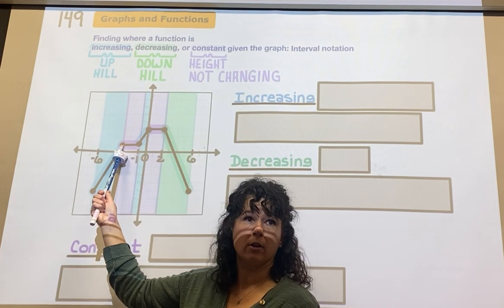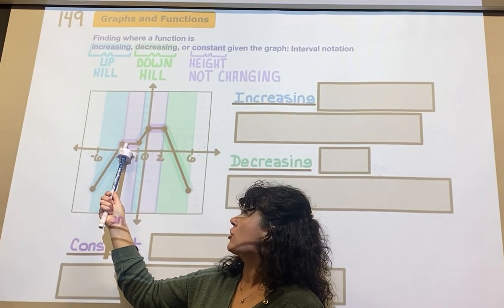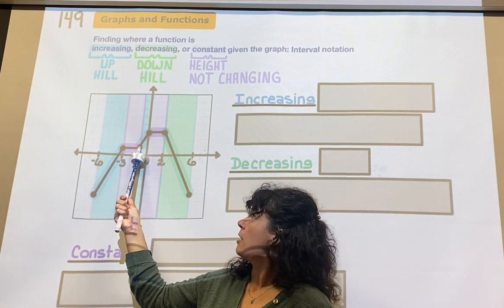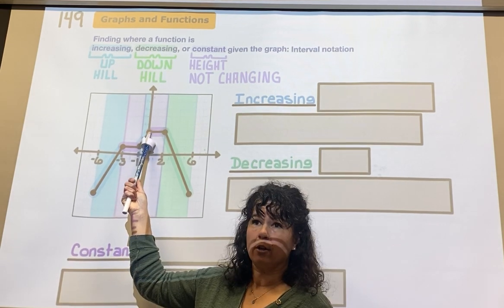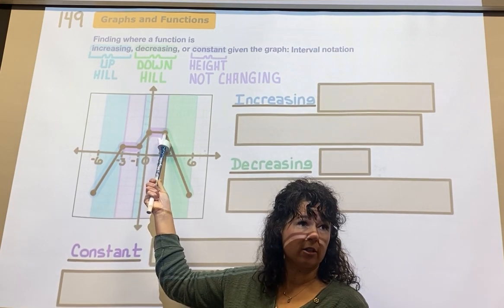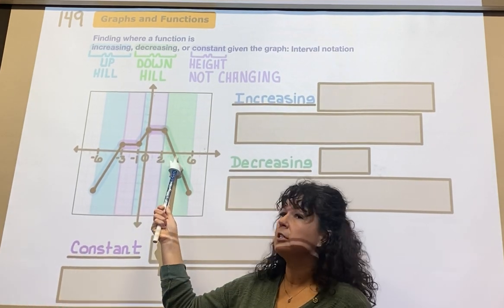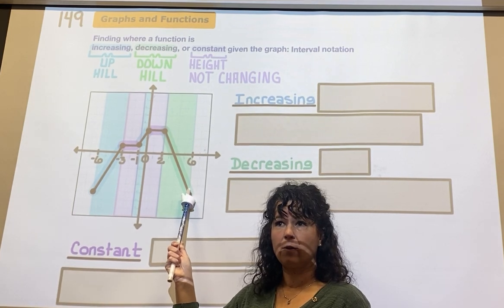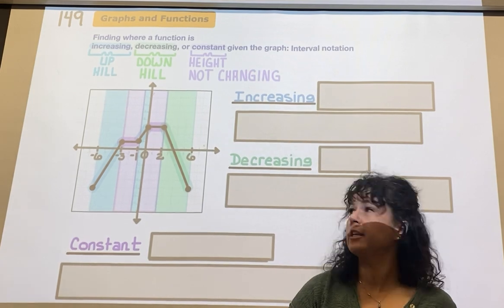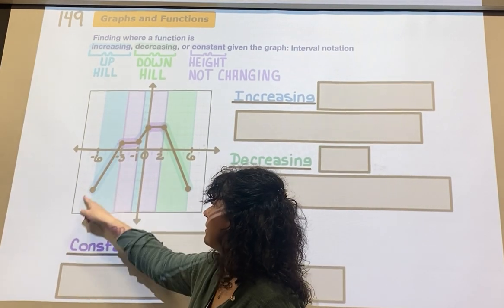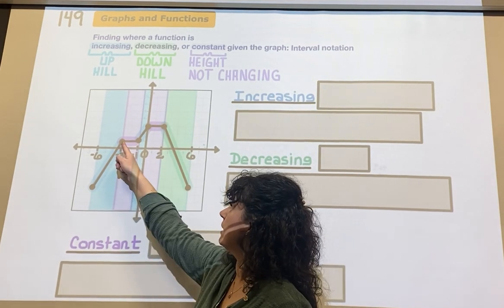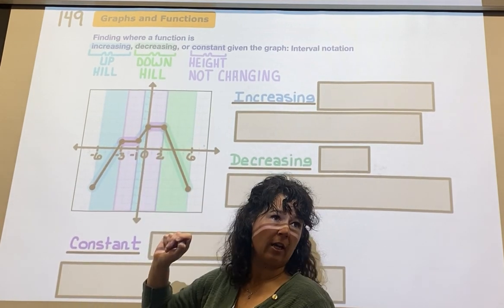This little section right here is going uphill, this section is constant going straight across, this section is uphill, this is straight across, and this is downhill. So where is it increasing? It's increasing there and there. Where is it constant? Right there and there. And where is it decreasing? Right there.